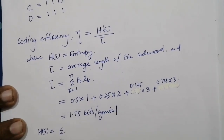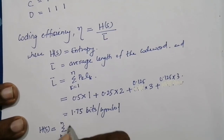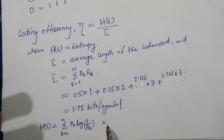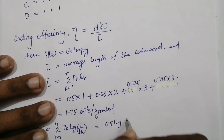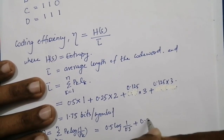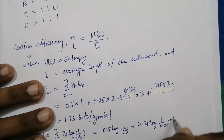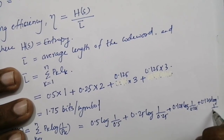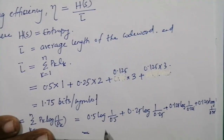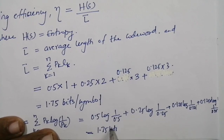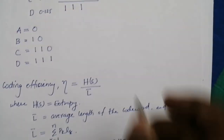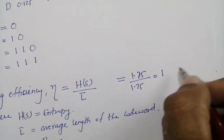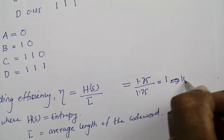Don't forget to include the units 'bits per symbol.' Similarly, the entropy H(S) = Σ p_k · log(1/p_k) for k = 1 to n. This equals 0.5·log(1/0.5) + 0.25·log(1/0.25) + 0.125·log(1/0.125) + 0.125·log(1/0.125) = 1.75 bits per symbol. Therefore, coding efficiency = 1.75 / 1.75 = 1, which implies 100% coding efficiency.